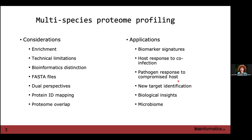For applications, biomarker signatures is one area we work on — looking at how the host responds to infection versus how the pathogen adapts. If you're thinking about moving protein-level signatures into a clinical application, targeting proteins from both perspectives gives you information on the status of infection, what is causing it, the state of infection, and the effectiveness of drugs being used for therapy. You can also look at how the host and pathogen each respond, or compare different cell lines.